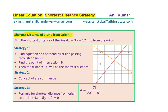The question is: find the shortest distance of the line 4x minus 3y minus 12 equals to zero from the origin. You can always pause the video, answer this question, and then look into my suggestions. The line 4x minus 3y minus 12 equals to zero is shown here — that is the equation of the line which has been drawn. You can always find the x and y intercepts and then draw this line.